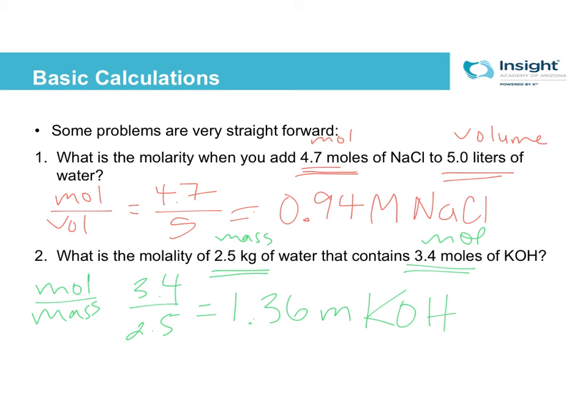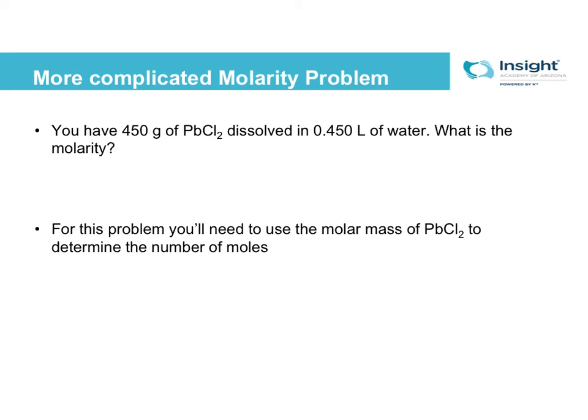So just to kind of preview a more complicated one, this is something that requires you to figure out the moles. It's not given directly to you. So if you have 450 grams of lead chloride dissolved in 0.45 liters of water, what is the molarity? So we need to be able to take this number and convert that into moles. So this requires some memory from unit 6 of chemistry A and using the molar mass to do that. So just in case that's not fresh in your mind and you don't remember how to do that, I've attached an extra recording as a review. So check that out before class tomorrow and we will talk more complicated problems, how to solve this one, what to do if you're not given kilograms or liters as far as your mass or your volume, and practice those sorts of things together.